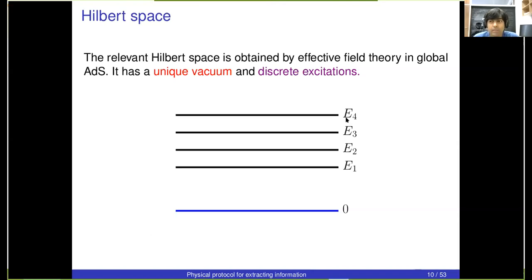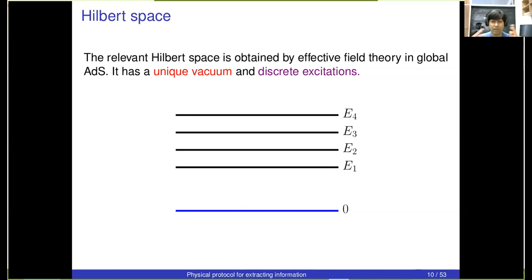Regarding the question about infinitely degenerate vacua: there are no infinite vacuum degeneracies here in global AdS. If you're worried about moduli, you might be able to change those and come up with different states, but those are all in different superselection sectors. I've fixed the theory, and I'm in a given theory doing effective field theory once again about global AdS. If you added string-theoretic excitations as effective fields, there would be massive excitations at the string scale, but they wouldn't change the uniqueness of the vacuum.